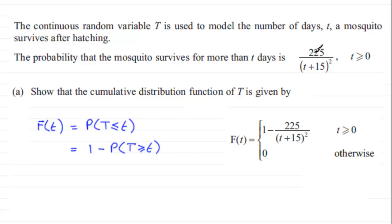And we've got that probability there. So that's going to be 1 minus 225/(t+15)².